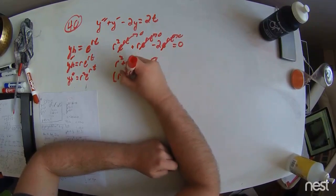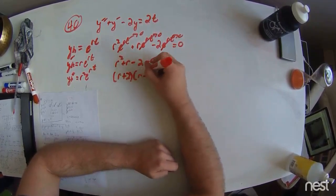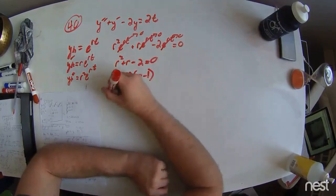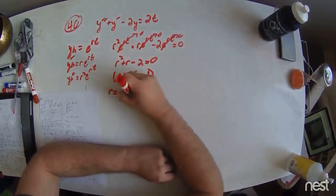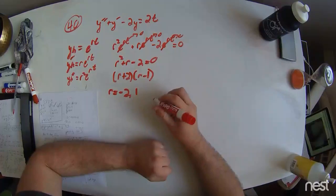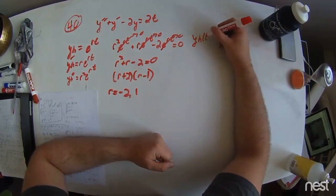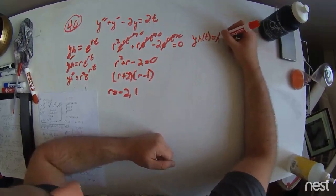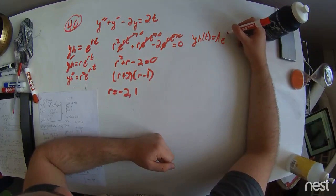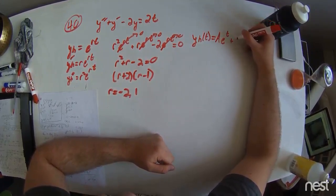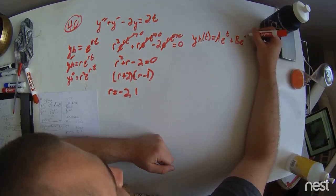Factoring this, we have r plus 2 and r minus 1. Solving for r, we have r equal to minus 2 and 1. We can therefore write y homogeneous of t to be a e to the t plus b e to the minus 2t.